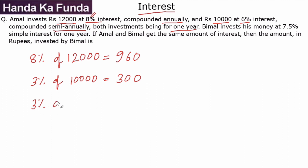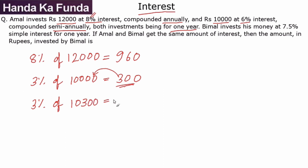For the second half of the year, he will get 3% on the increased value because it is compound interest — whatever interest is earned gets added to the principal. So for the second set of six months, he will get 3% of 10,300. Since 1% is 103, 3% is 309.